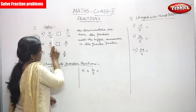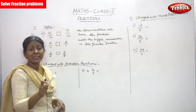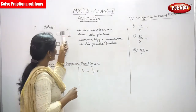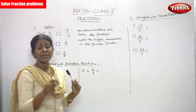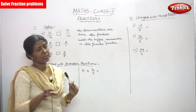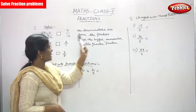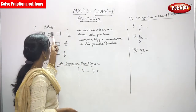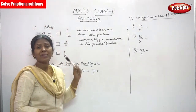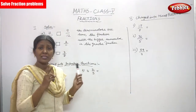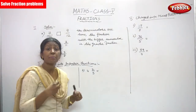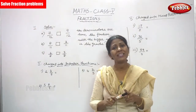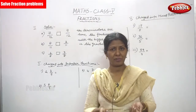If the denominators are the same, you only need to look at the numerator — which number is greater. Between 7 and 9, which is the bigger number? 9 is the bigger number. So 9 by 12 is the greater fraction.